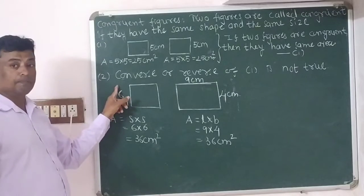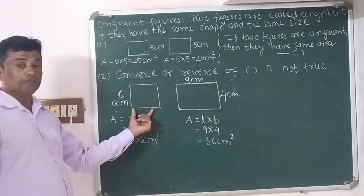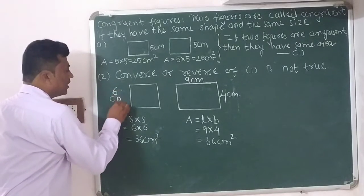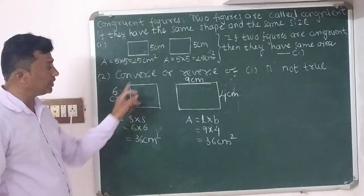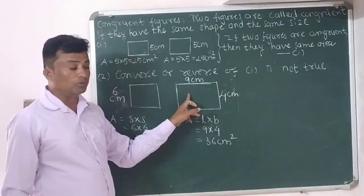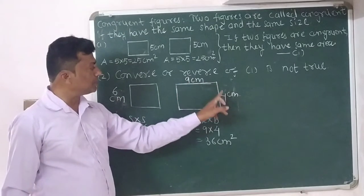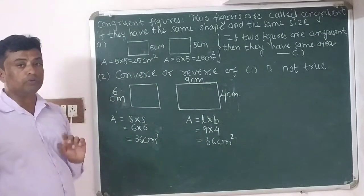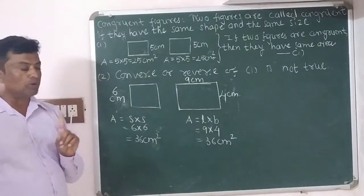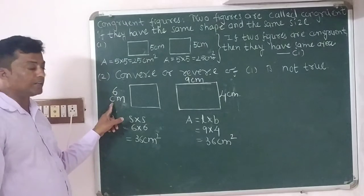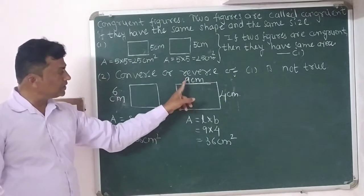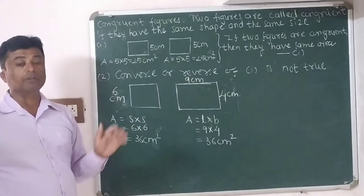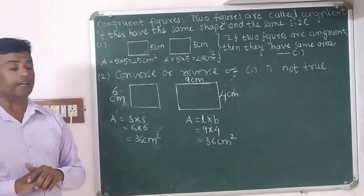In example number two, one square is given with side length 6 centimeters. One rectangle is also given with length 9 centimeters and breadth 4 centimeters. Now we will identify their areas.